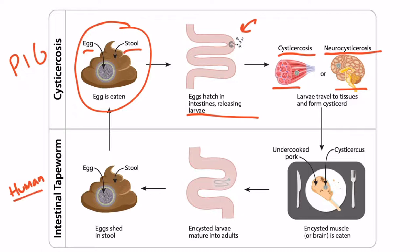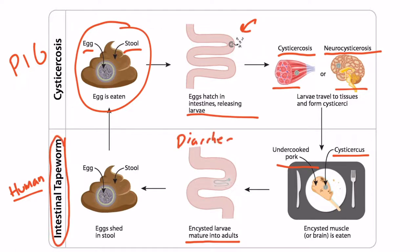Now we're in the human part: the human eats undercooked pork that has a cysticercus in it, and that cysticercus ends up going to the intestines and matures into an adult. The encysted larvae — the cysticercus — will mature into an adult, causing intestinal tapeworm, which can cause diarrhea and other nonspecific symptoms like bloating and abdominal pain. The adult tapeworm will then release eggs shed in the stool, and if the pig's food is contaminated with human feces, the pig will eat it and the life cycle continues.